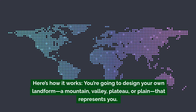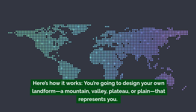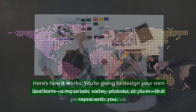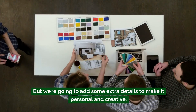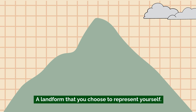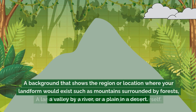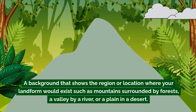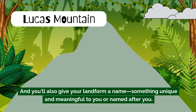Here's how it works. You're going to design your own landform — a mountain, valley, plateau, or plain — that represents you, with extra details to make it personal and creative. You'll be drawing a landform that you choose to represent yourself, with a background that shows the region or location where your landform would exist, such as mountains surrounded by forests, a valley by a river, or a plain in a desert. You'll also give your landform a name, something unique and meaningful to you or named after you.